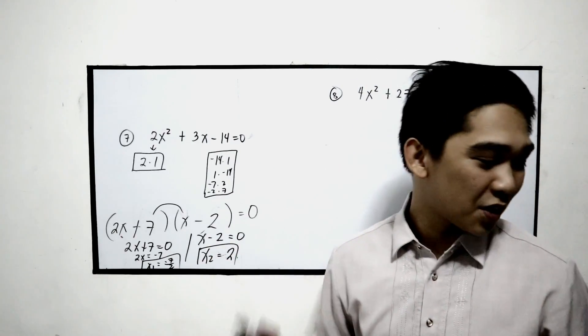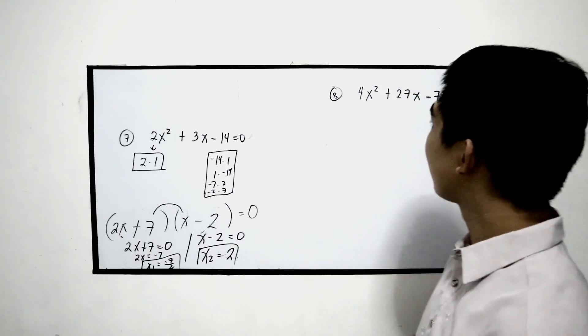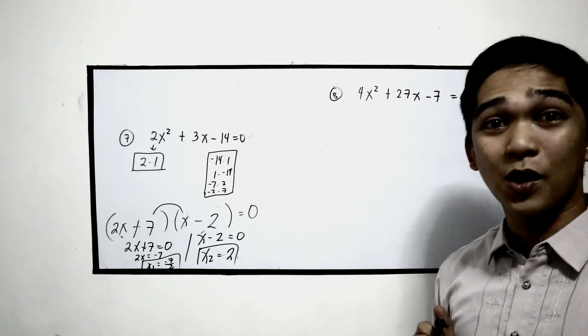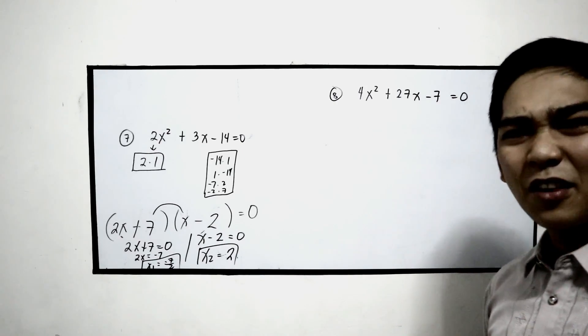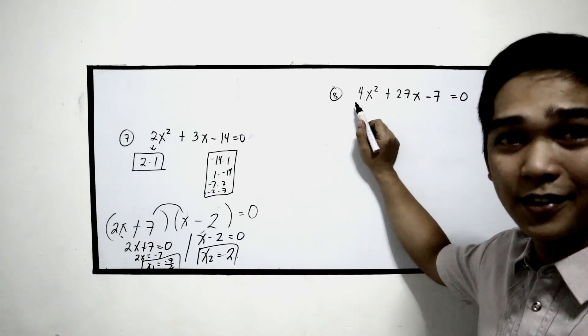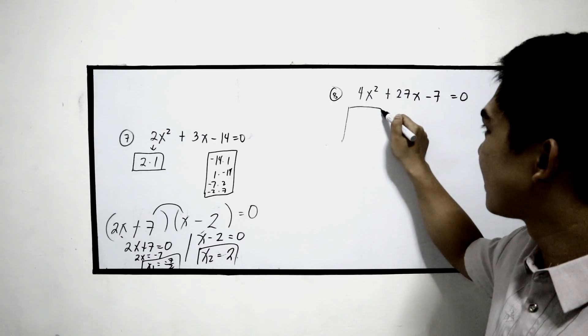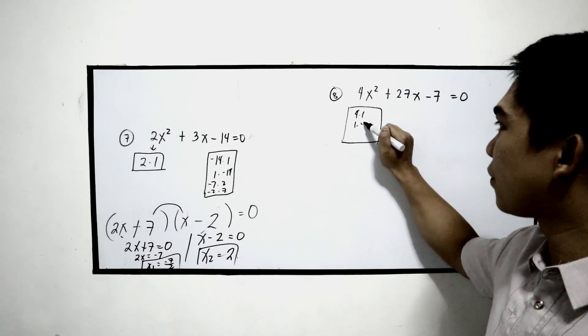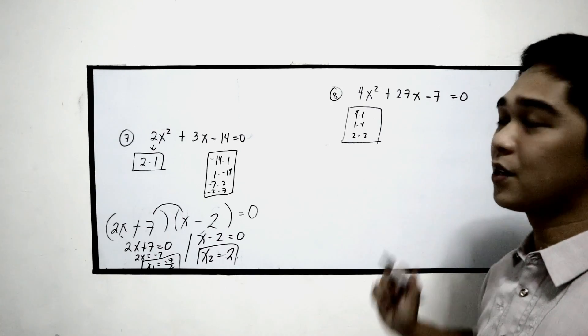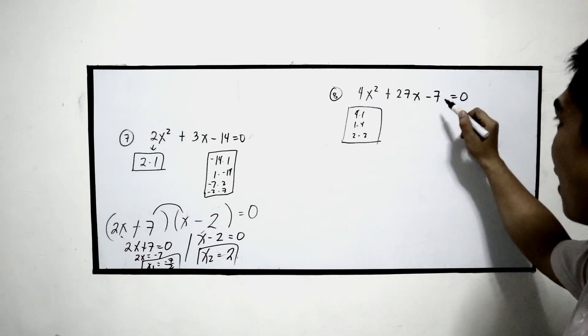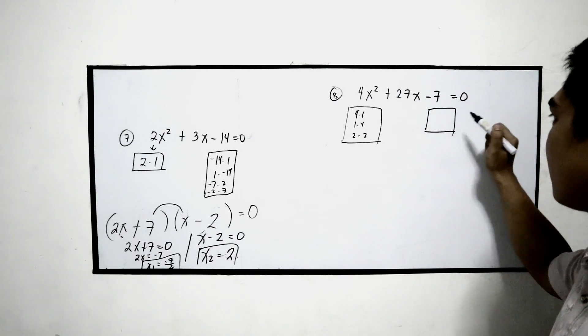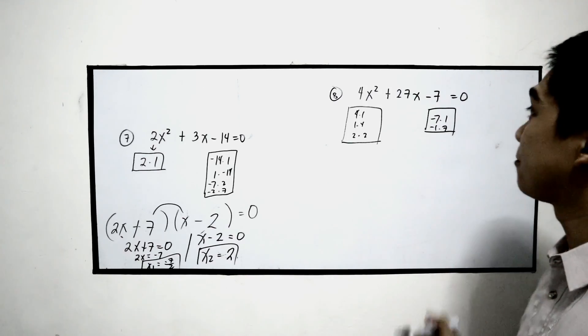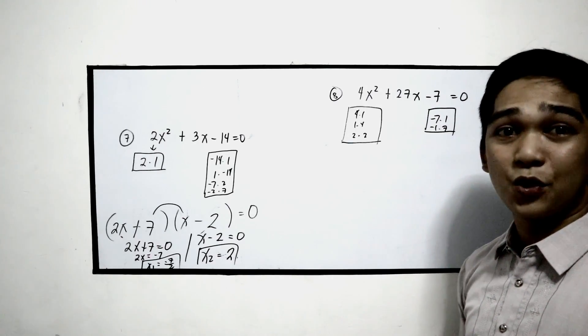Another example. Our last example, number 8. 4x squared plus 27x minus 7 is equal to 0. Get all the factors of 4, that is 4 times 1, 1 times 4, 2 times 2. And the factors of negative 7, negative 7 times 1 or negative 1 times 7. And use the trial and error.